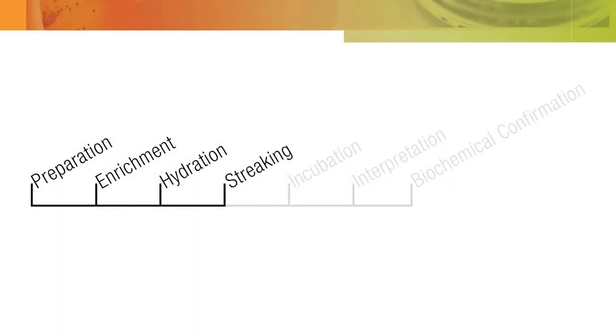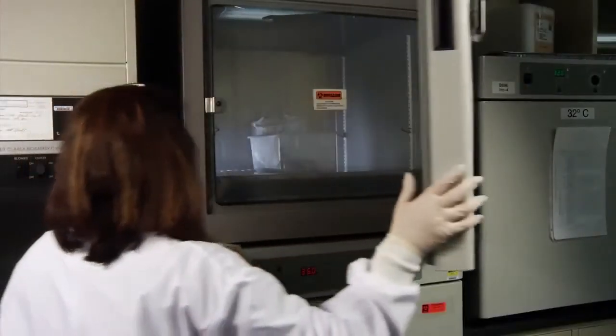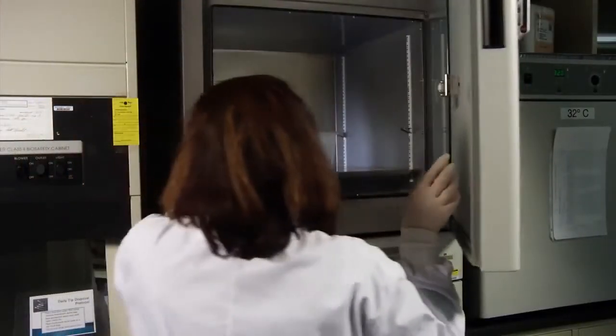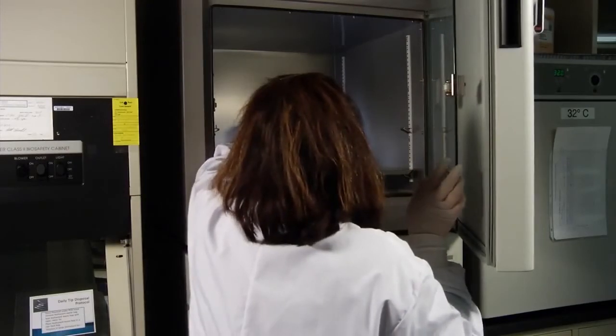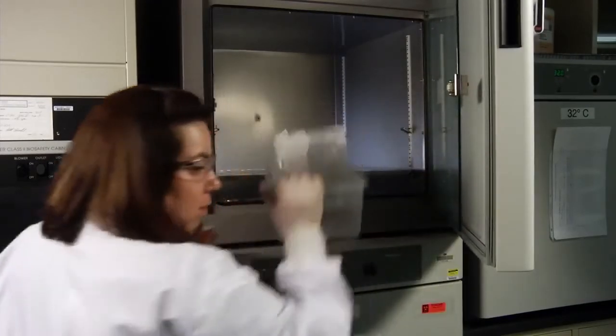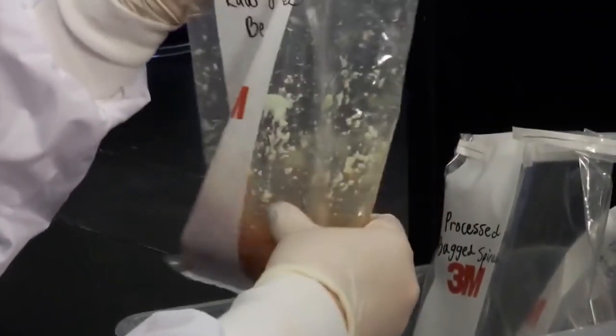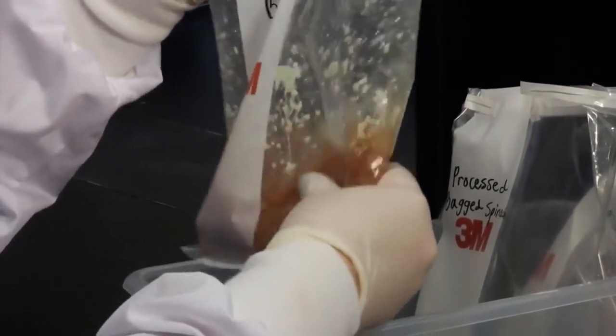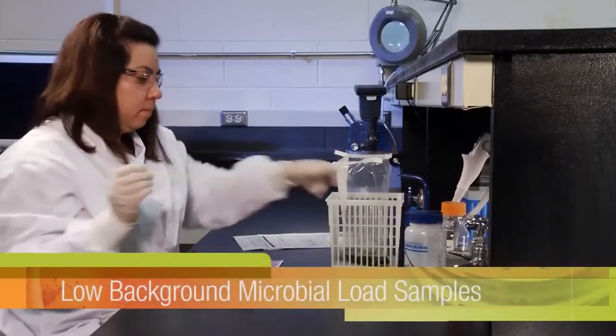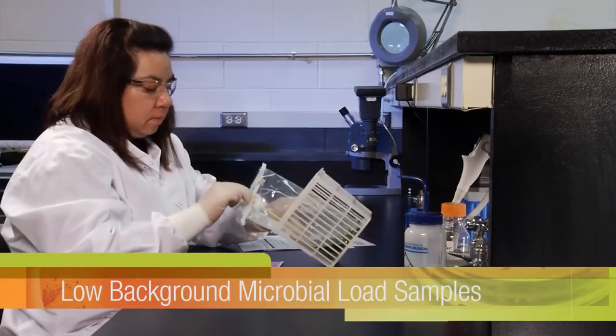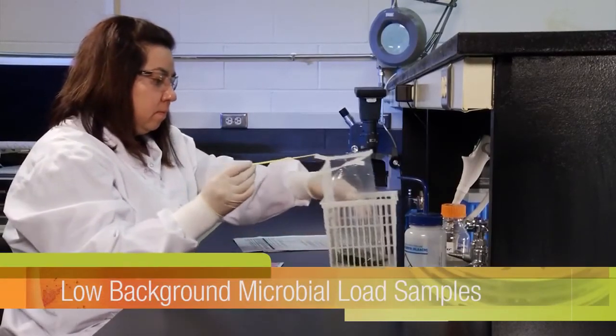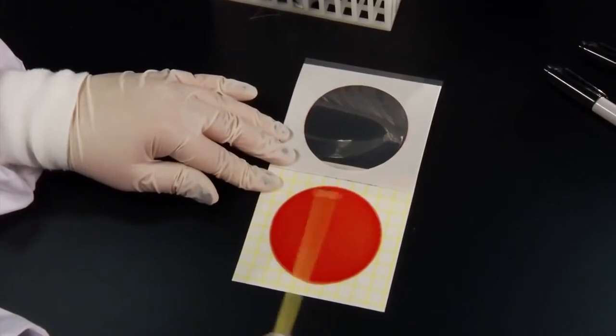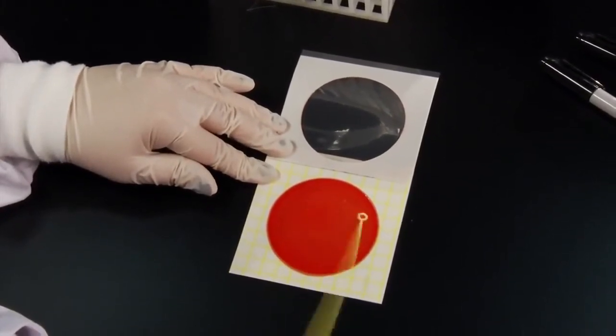The next step is streaking your enriched product samples onto the pre-hydrated 3M Petrifilm Salmonella express plate. Remove the enrichment medium from the incubator after the required incubation period and agitate its contents by hand. For low background microbial load samples, proceed directly with streaking the enriched sample onto a hydrated plate.